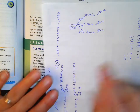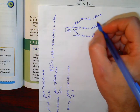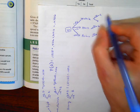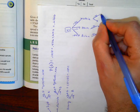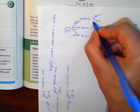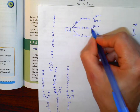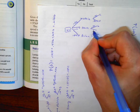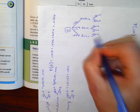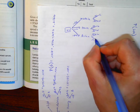We construct a tree diagram: lactose intolerant or not. That gives 85% of whites not lactose intolerant, 30% of Blacks not lactose intolerant, and 10% of Asians not lactose intolerant.